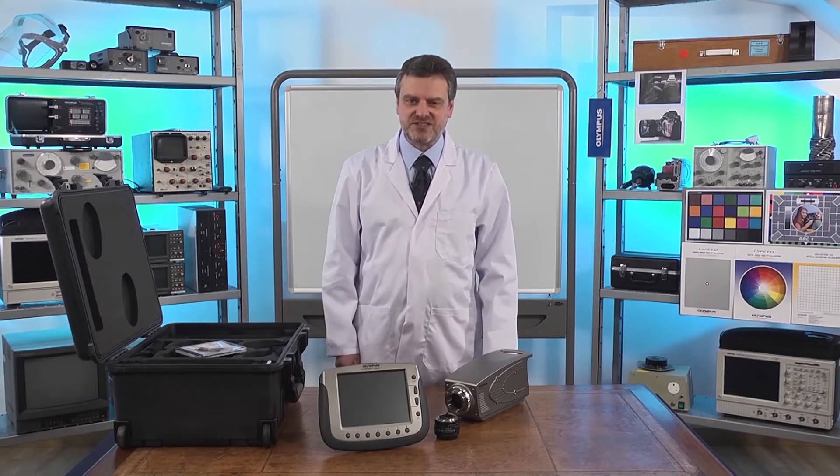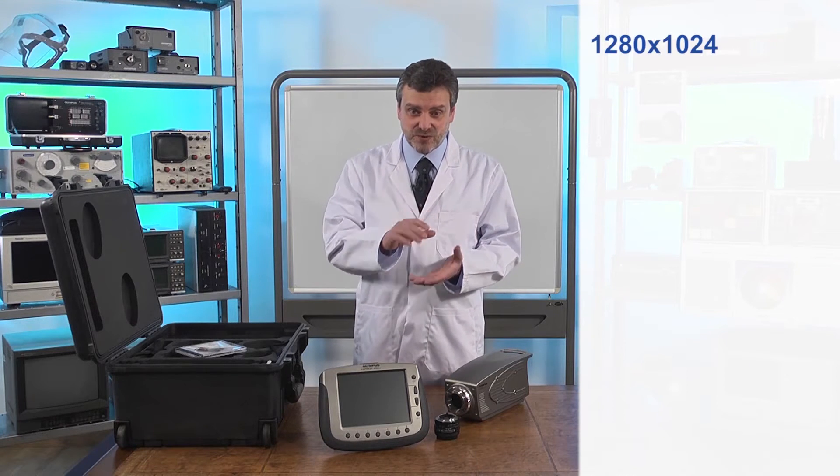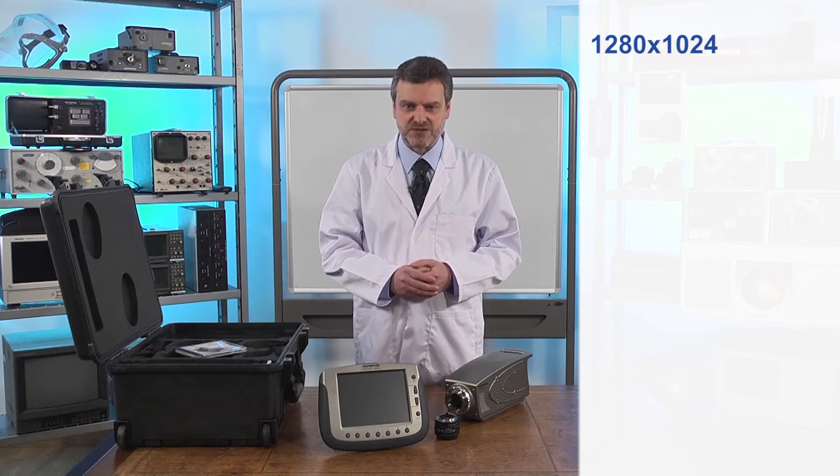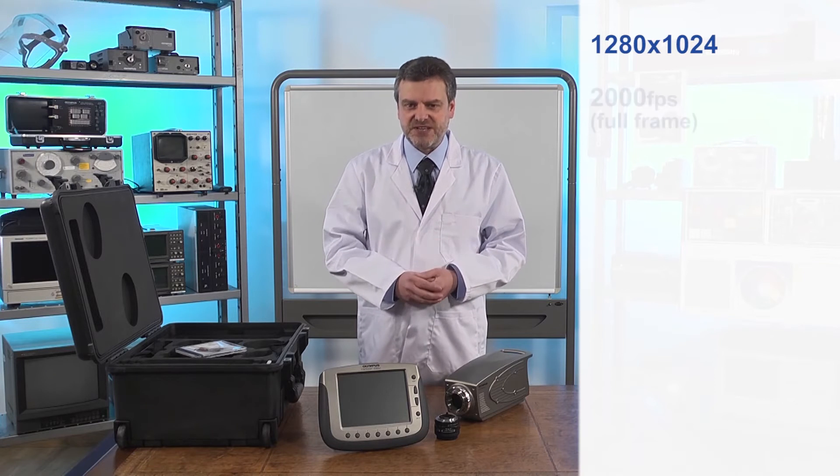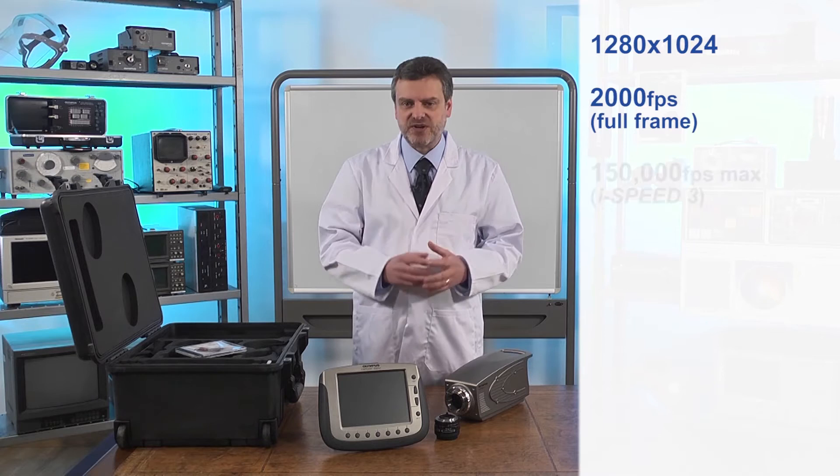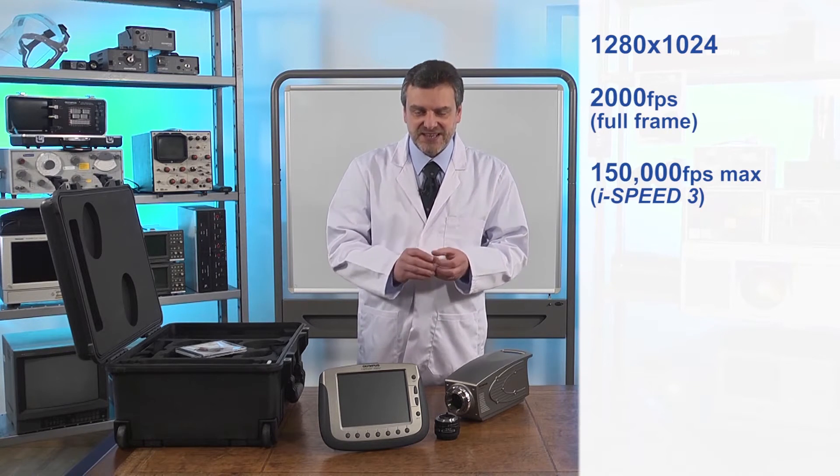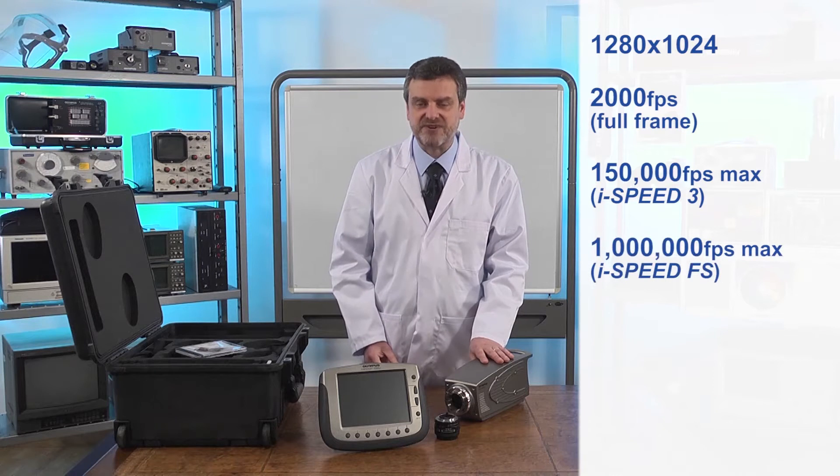The key specifications of the camera include a resolution of 1280 by 1024, that's 1.3 megapixels and a full chip speed of 2000 frames per second. If we window down we can run at 150,000 frames per second and in window mode the FS can take up to a million frames a second.